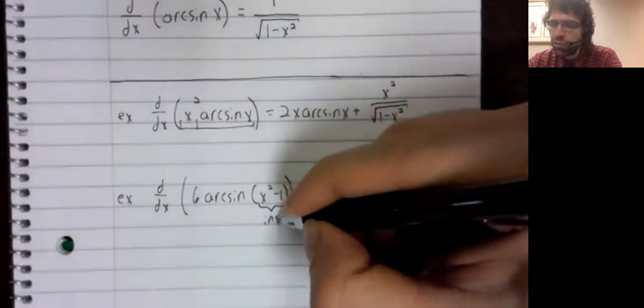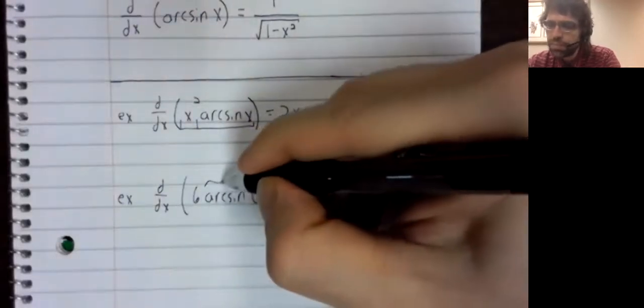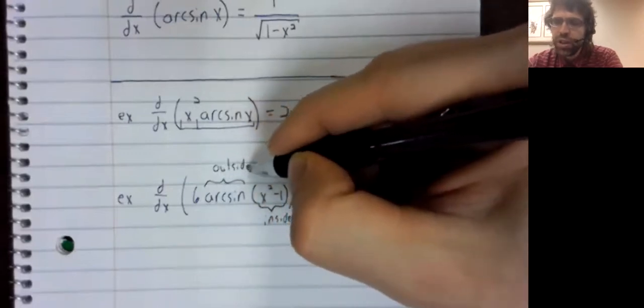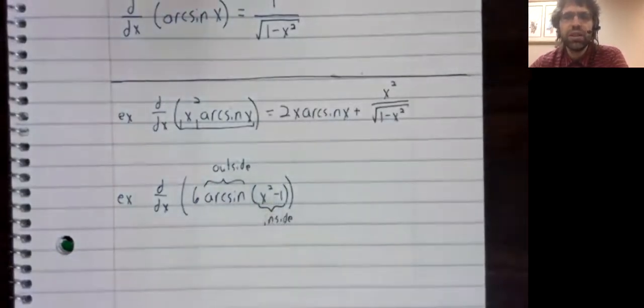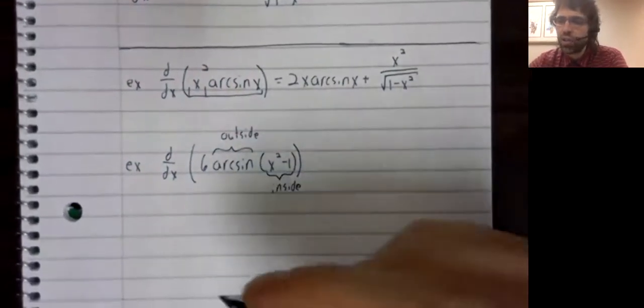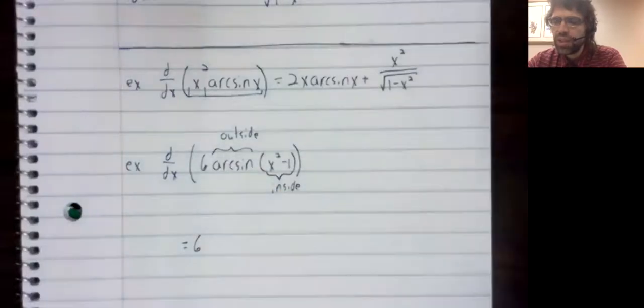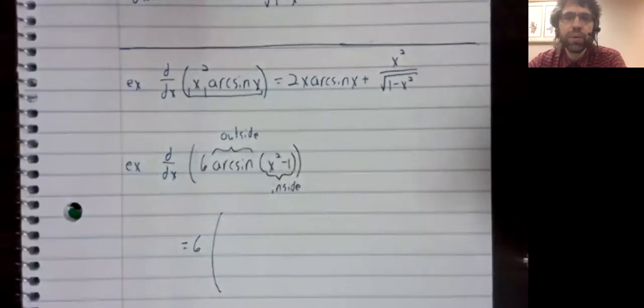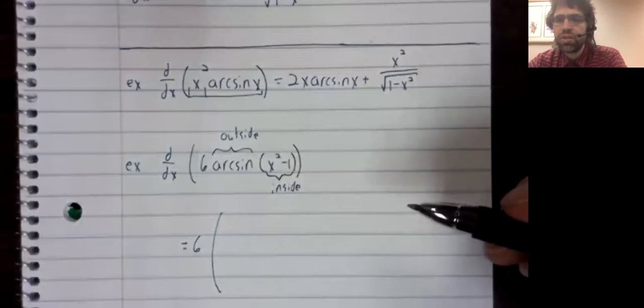That's a chain rule problem. The arcsine is the outside function. Whatever we have here inside the parentheses is an inside function. So this six is a constant, it just sits there. Don't worry about it. The derivative of the arcsine.